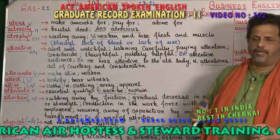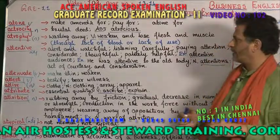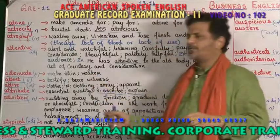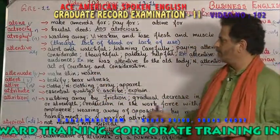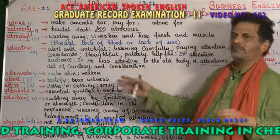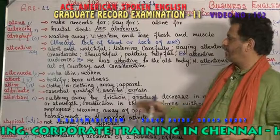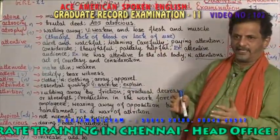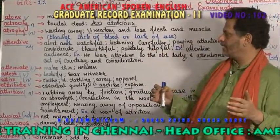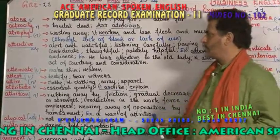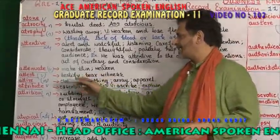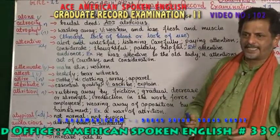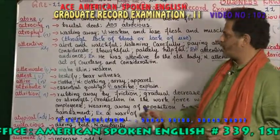'Attenuate' — it is a verb — means to make something thin or to weaken something. If something is strong, you weaken it; if something is fat, you make it thin. Next: 'attest.' Attest means to testify.